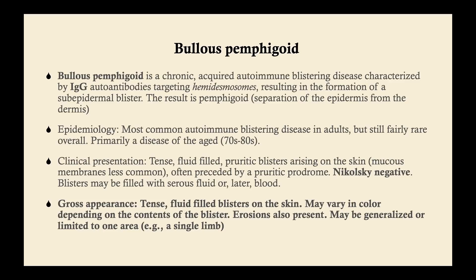Bullous pemphigoid is the most common autoimmune blistering disease in adults, but still pretty rare overall, usually occurring in people in their 70s and 80s. The clinical presentation is tense, fluid-filled, pruritic blisters — these are tense and strong blisters. Usually they're just on the skin, not on the mucous membranes, though in about 10 to 30 percent of cases they are on mucous membranes as well. It's often preceded by a pruritic prodrome — healthy-looking skin will itch and then these blisters develop.